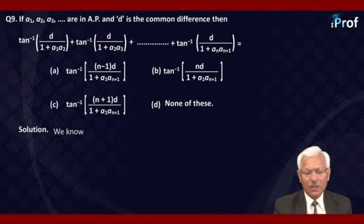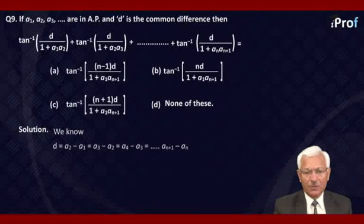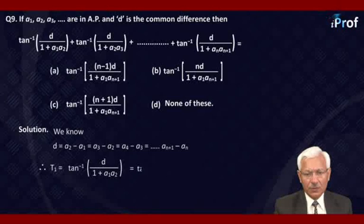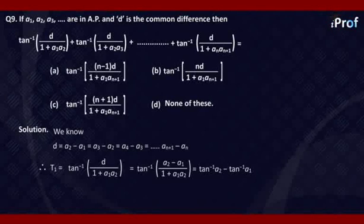We know that D is the common difference, therefore D equals A2 minus A1, or A3 minus A2, or A4 minus A3, and similarly AN+1 minus AN. The first term T1 equals tangent inverse D upon 1 plus A1·A2. Replacing D by A2 minus A1, we get tangent inverse (A2 minus A1) upon 1 plus A1·A2, which equals tangent inverse A2 minus tangent inverse A1, using the formula for inverse trigonometric functions.